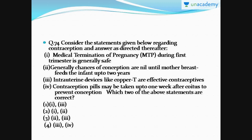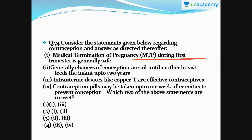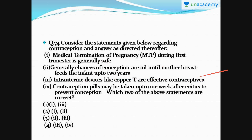Question number 74: you have to read four statements and tell which two are correct. The right answer is option number one — the first and third statements are correct. MTP during the first trimester is generally safe; if abortion is done within three months it is considered safe. Intra-uterine devices like Copper-T are effective contraceptives because they prevent implantation of the zygote.